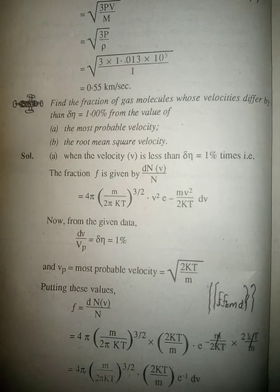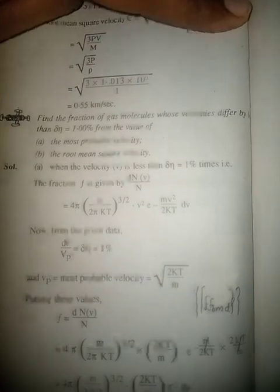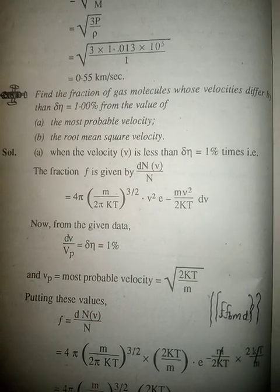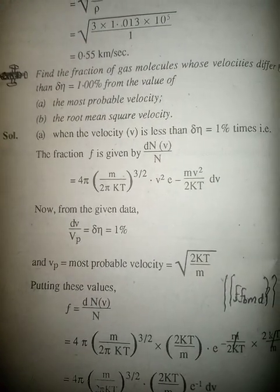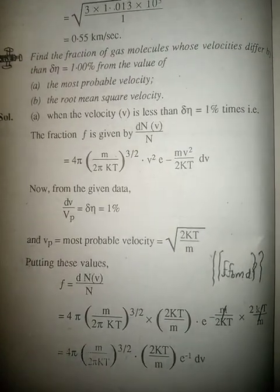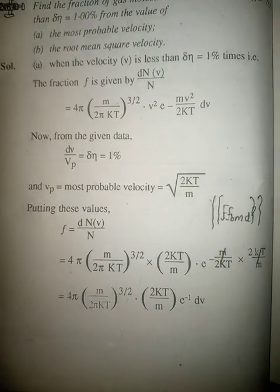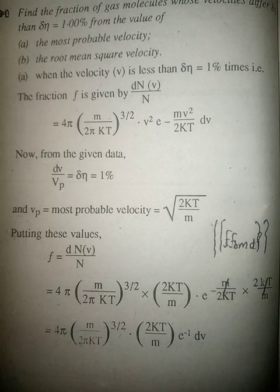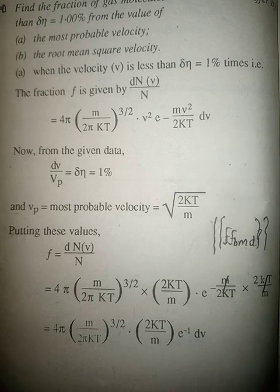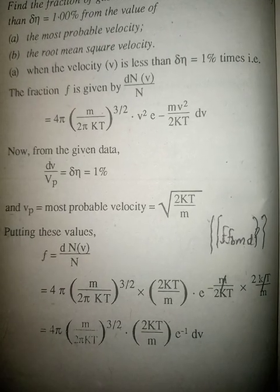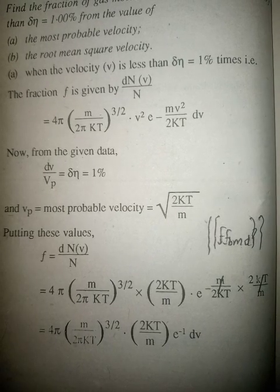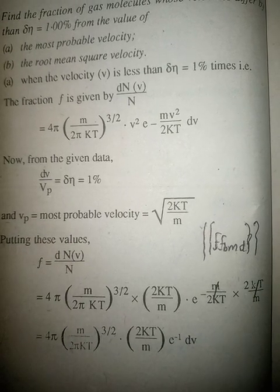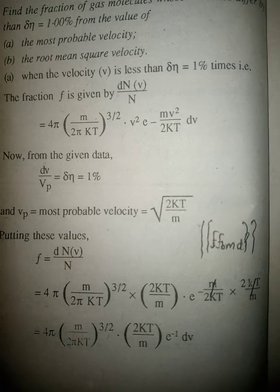Find the fraction of gas molecules whose velocities differ by less than delta η = 1.00 percent from: (a) the most probable velocity, and (b) the root mean square velocity. Solution: when the velocity v differs by less than η = Δη = 1 percent, the fraction f is given by dN/N = 4π(m/2πkT)^(3/2) × v² × e^(−mv²/2kT) dv.